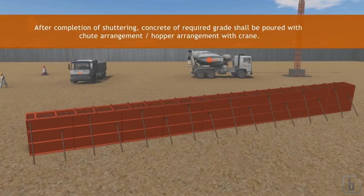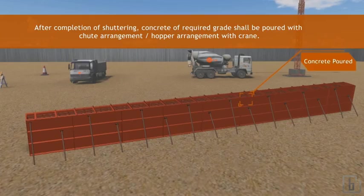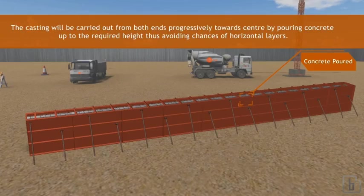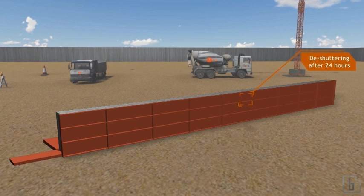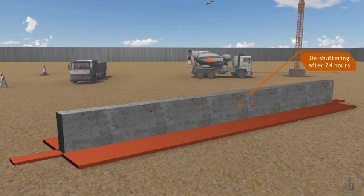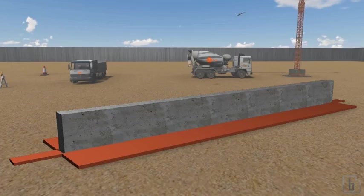After completion of shuttering, concrete of required grade shall be poured with chute arrangement, hopper arrangement with crane. The casting will be carried out from both ends progressively toward center by pouring concrete up to the required height, thus avoiding chances of horizontal layers. Side shutter shall be removed after 24 hours while bottom shutter shall be kept three days after casting.